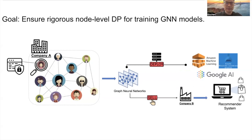For example, if company A trains a GNN model using the social network data of its users, and wants to deploy the model to a public cloud service of another company, the potential risk is that adversaries could extract company A's users' private information from the model, without ever accessing the original training graph. This situation highlights the critical need for GNN models to protect sensitive training data.